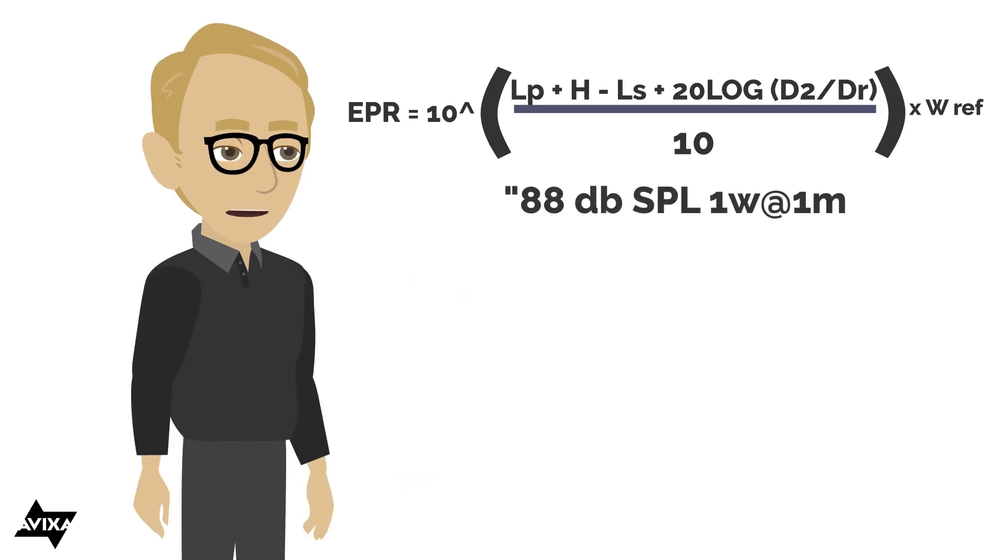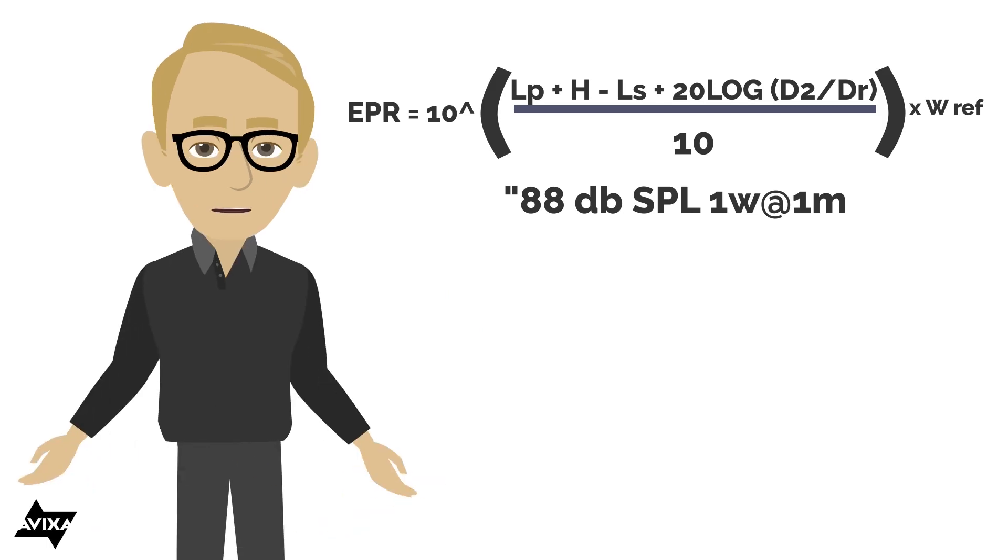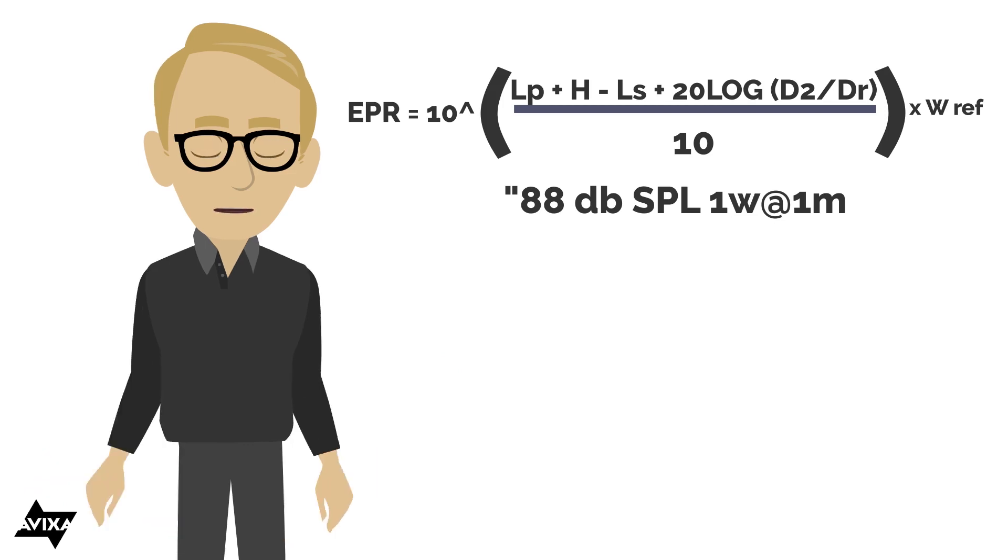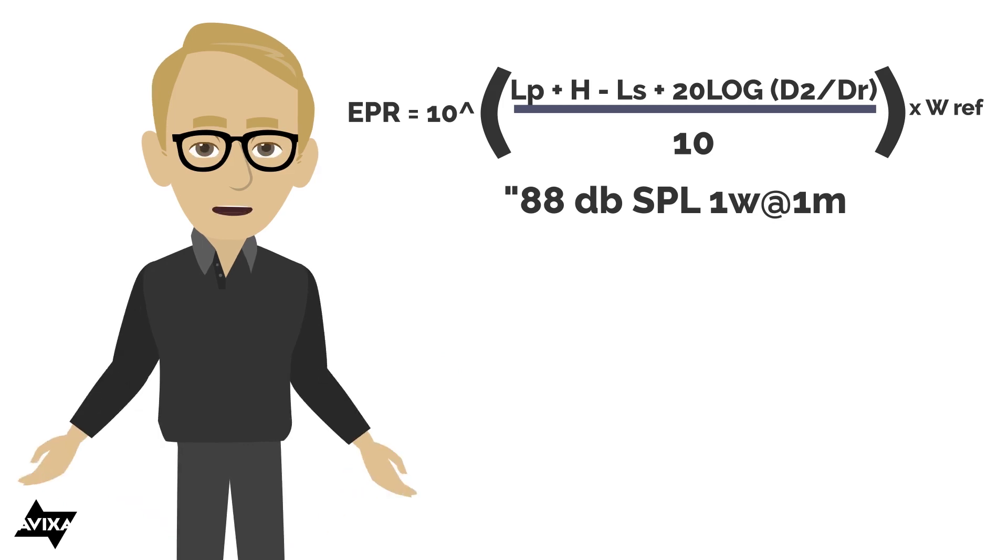Part of what we're going to put in this formula comes out of loudspeaker specifications. This is just a sample loudspeaker specification: 88 dB SPL one watt at one meter. What this is trying to tell us is, if I put one watt into the loudspeaker and I go one meter away from it, I should be able to measure 88 dB SPL. That's giving us our loudspeaker sensitivity.